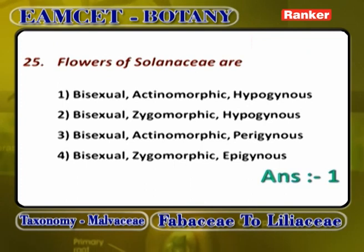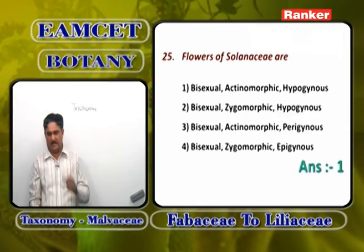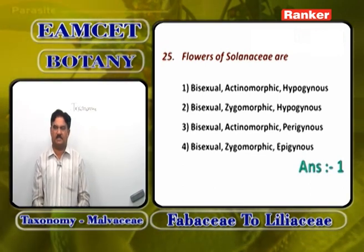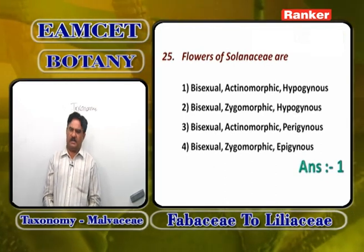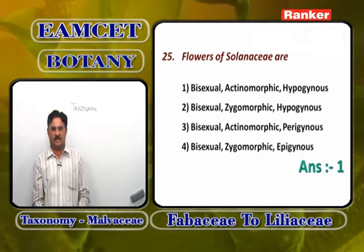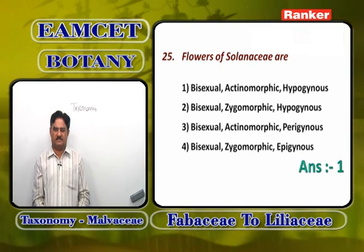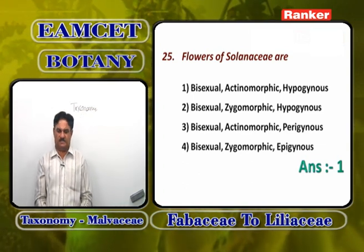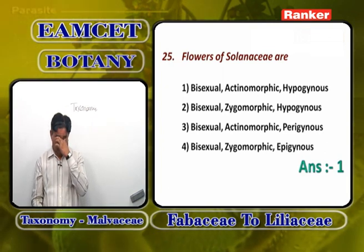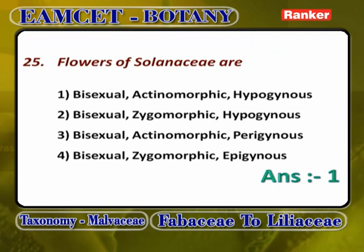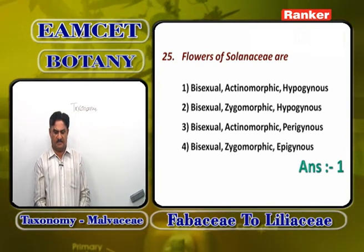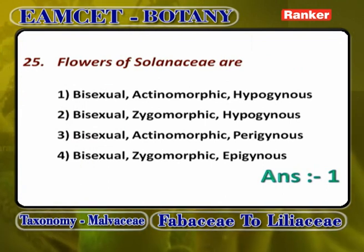Flowers of Solanaceae are bisexual, actinomorphic, and hypogynous. Bisexual — they contain androecium and gynoecium. Actinomorphic — they give two equal halves in any plane. Hypogynous — thalamus slightly bulged, ovary at the tip, remaining floral parts formed below, position of ovary is superior. Bisexual actinomorphic hypogynous is correct. Bisexual zygomorphic, bisexual actinomorphic perigynous, and bisexual zygomorphic epigynous are all wrong. Answer: first option.